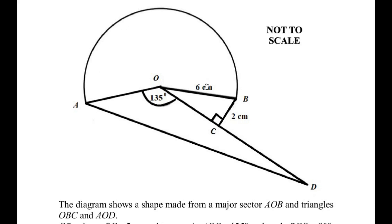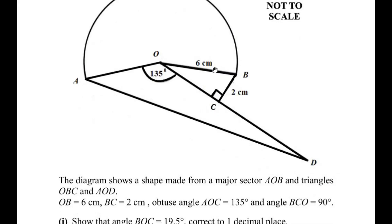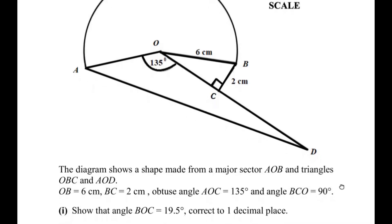The diagram shows a shape made from a major sector AOB and triangles OBC and AOD. OB is given as 6 centimeters, BC is given as 2 centimeters, and obtuse angle AOC is 135 degrees. Angle BCO is given as 90 degrees.